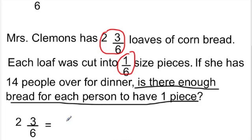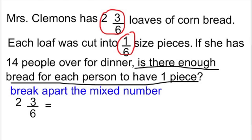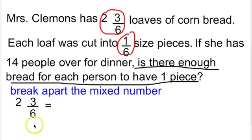So in order to do that, we need to write 2 and 3/6 as a fraction. And to do that, we are going to break apart the mixed number 2 and 3/6. We are going to take it from a mixed number to a fraction and break it apart. We are going to separate the whole number 2 from the fraction 3/6.